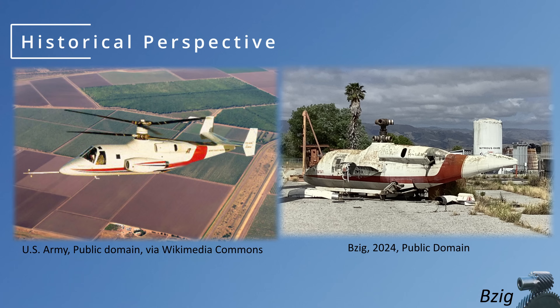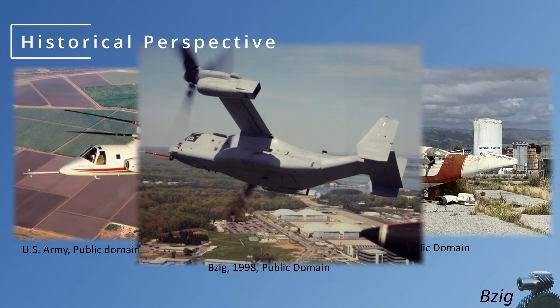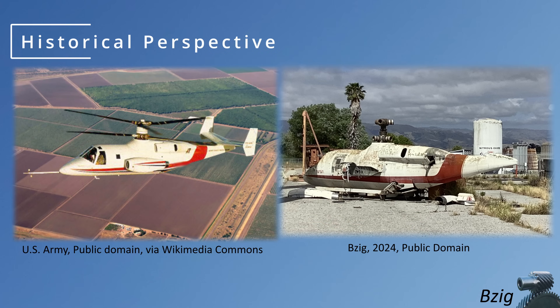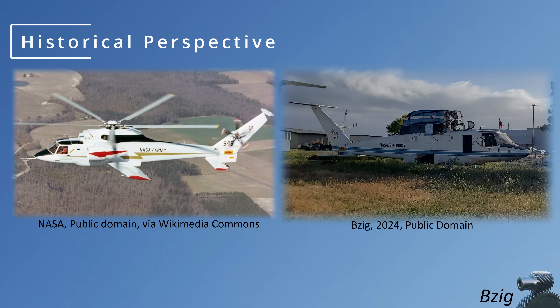I was at Moffett Field earlier this year, and here's a photo showing what's become of the S69. I find this a little sad. There was so much innovation in the 70s and 80s for high-speed rotary wing flight, and while we finally have a 275-knot rotorcraft, much of this early development seems relegated to a side note in aviation history. Here's also a photo of the S72 Research Aircraft, also at Moffett Field.